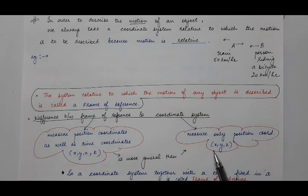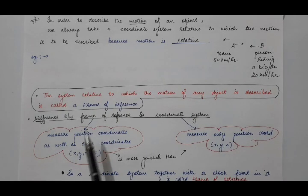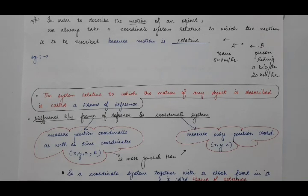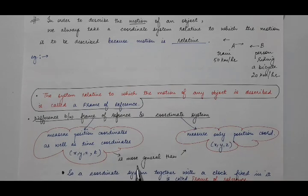A coordinate system will tell us only about x, y, z — the position coordinates. But a frame of reference measures the position coordinates of the object as well as the time coordinate. So it gives us knowledge of x, y, z, and t. We can say that a frame of reference is a more general concept than the coordinate system.